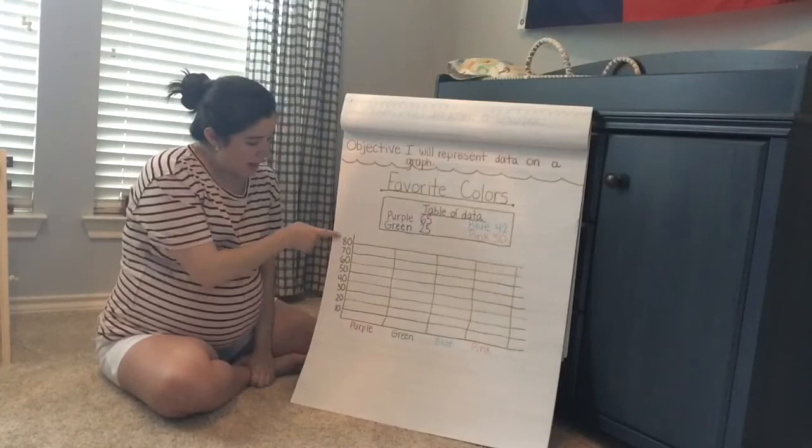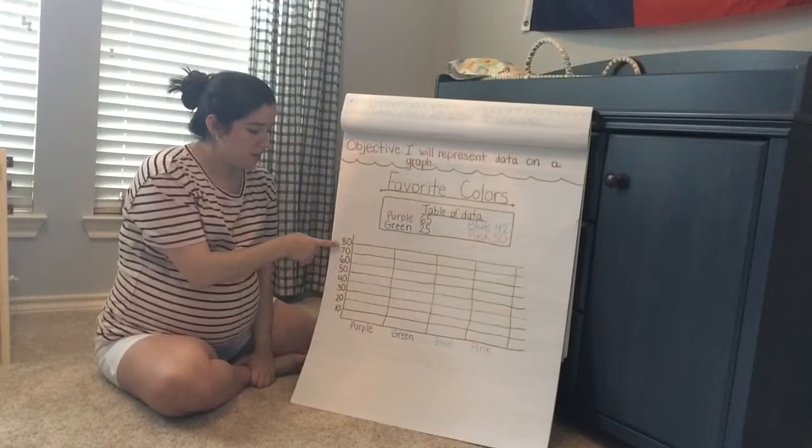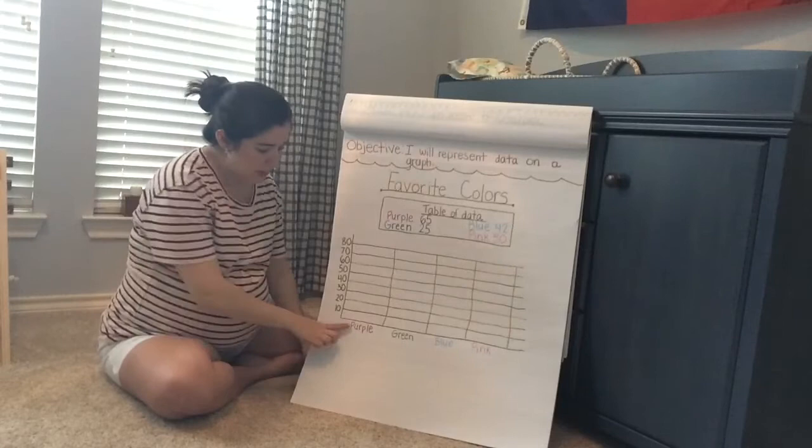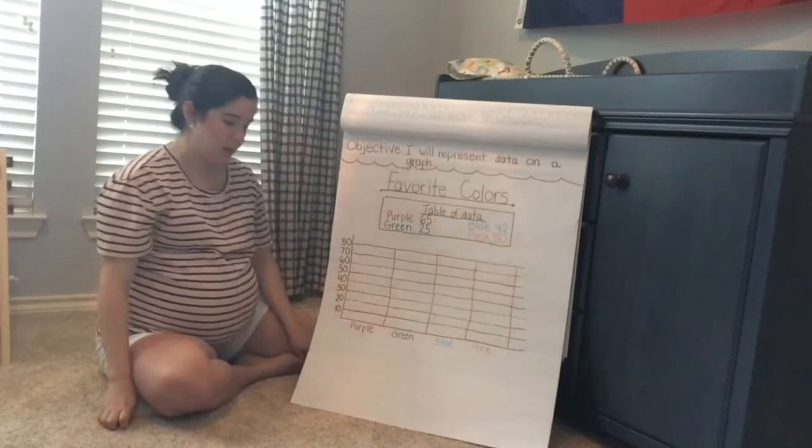I have decided to go by tens. You can see here it goes 10, 20, 30, 40, 50, 60, 70, up to 80. I decided to go up to 80 because I knew my biggest number was 65, so I needed to have a little bit more than 65. Here I have my colors going across: purple, green, blue, and pink.